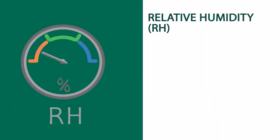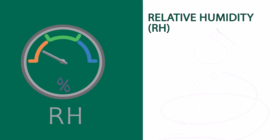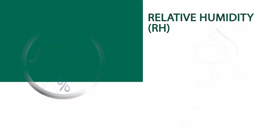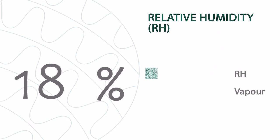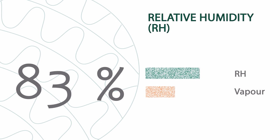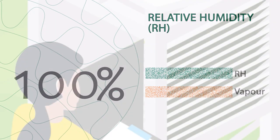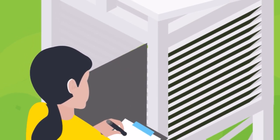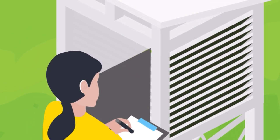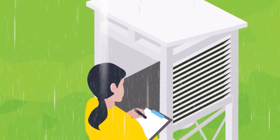Relative humidity. This tells you how much water vapor is in the air compared to how much it could hold at a given temperature. Think of it as a percentage. For example, if the relative humidity is 100%, it means the air is holding as much water vapor as it can at that temperature. This often leads to rain or the possibility of dew forming.